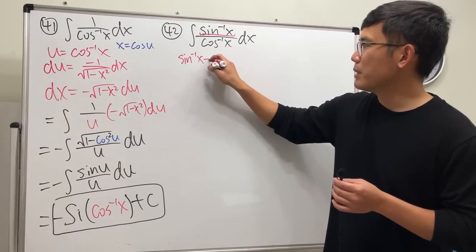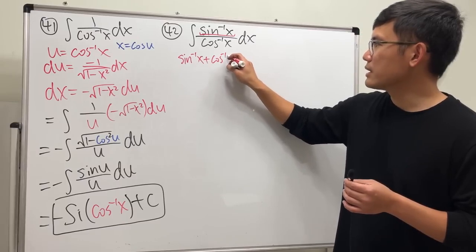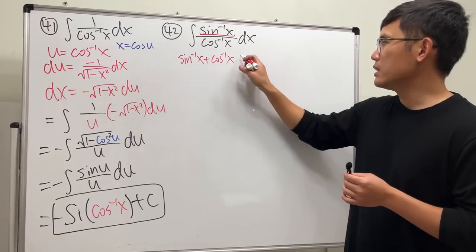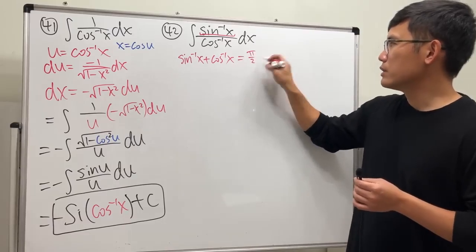Inverse sine of x plus inverse cosine of x. They are complementary angles, meaning that they add to 90 degrees. And in calculus, we are all adults now, so it's pi over 2.